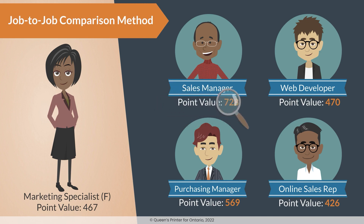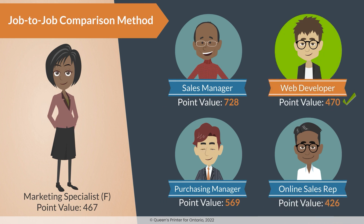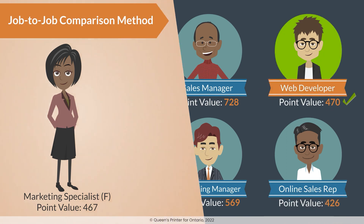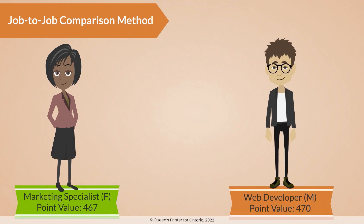If the point values are similar enough — and I'll show you an example of how to do this next — we then compare the job rates. A female job class that has a point value that is close or equal to the point value of a male comparator should be paid at least the same job rate.